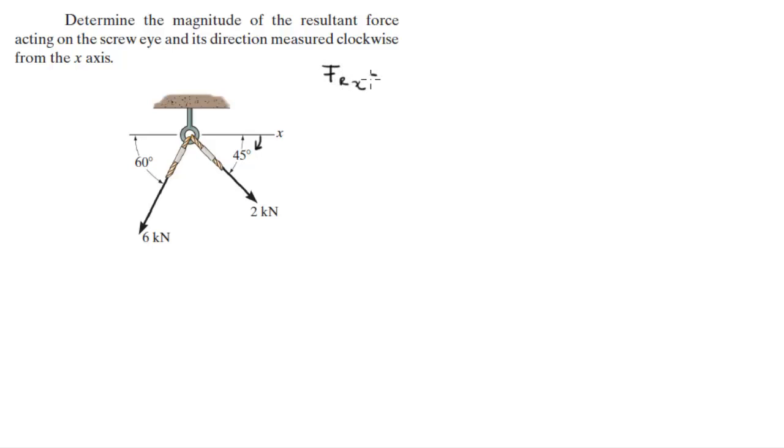The resultant force in the x direction is going to equal the sum of the x components. This force is divided into x and y components, and this force is also divided into x and y. We add the x components together by doing negative 6k cosine 60, which is this force right here, plus 2k cosine 45, and this equals negative 1.58k.